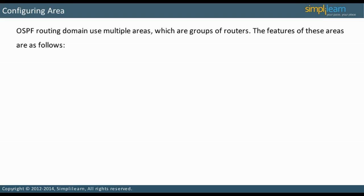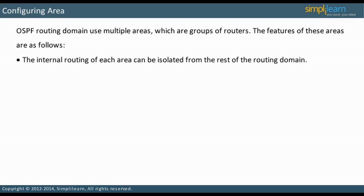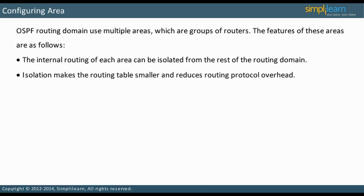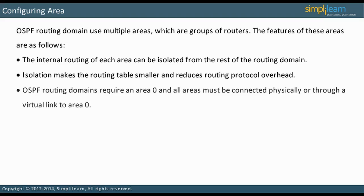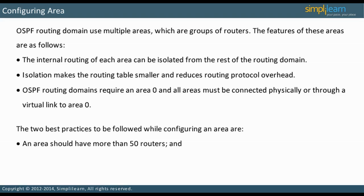An OSPF routing domain can use multiple areas, which are groups of routers. The internal routing of each area can be isolated from the rest of the routing domain, which makes the routing table smaller and reduces routing protocol overhead. All OSPF routing domains require an area 0. All areas must be connected to area 0 physically or through a virtual link. Best practice dictates that an area should have no more than 50 routers.